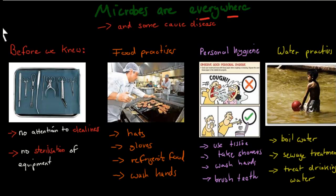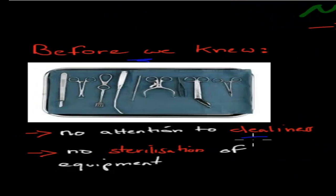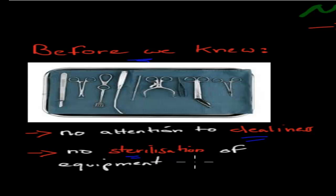We've used this technique in the past — the agar plate was developed by Robert Koch. We now know that microbes are literally everywhere: on our skin, in food, in water. And we know some of these microbes can cause disease, which is what makes them pathogens. Before we knew all this, we paid no attention to cleanliness and didn't sterilize our equipment. So people would often die in hospital, not from an infection caught outside, but because surgeons used unclean equipment, transferring pathogens that made patients fall sick. Now we know we need to be clean, sterilize equipment, and have good practices to stop pathogens from spreading.